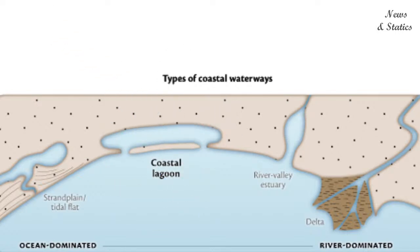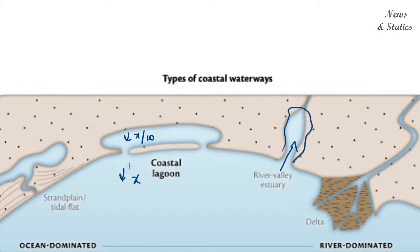Now compare this with an estuary. An estuary might also feel like a hollow inside the coast into which seawater has entered. But whereas in a lagoon, if the depth of the normal ocean is x, the depth of the lagoon might be x divided by 10 — so water has receded rather than entered. But in the case of an estuary, water actually enters into that hollow and floods it.